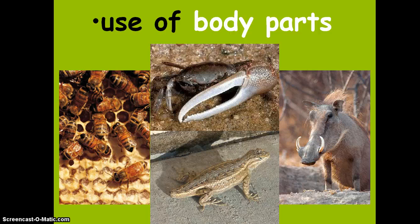Use of body parts to avoid predators: this crab has a very large claw to help defend itself. The warthog has tusks. The lizard can lose its tail — a predator can pull it off — but the lizard runs away without the tail and can grow a new one. Bees can obviously sting, using their stinger to help avoid predation or danger.